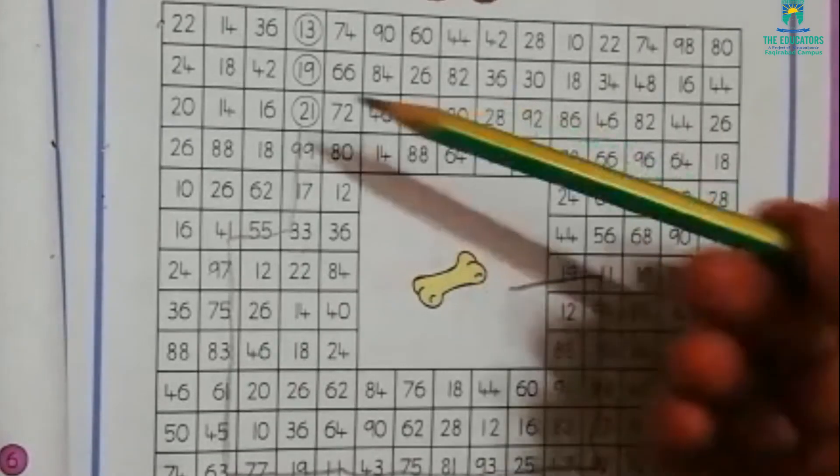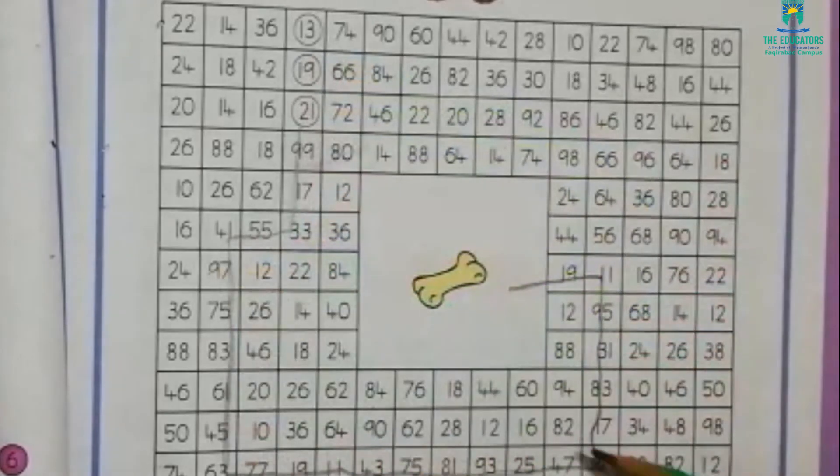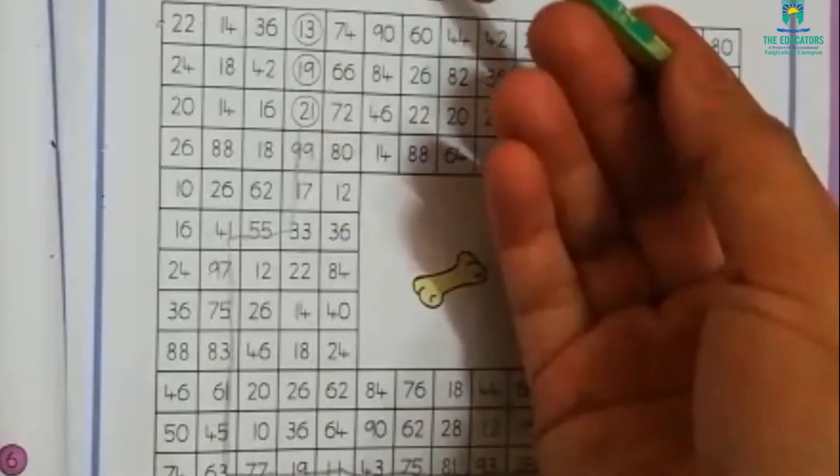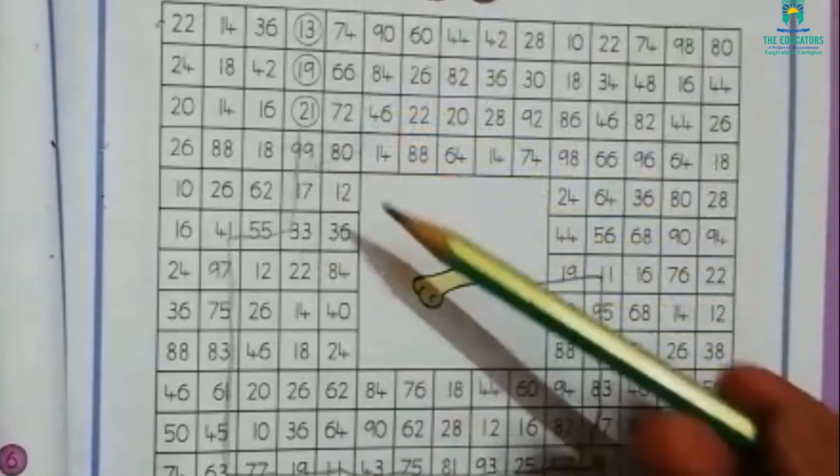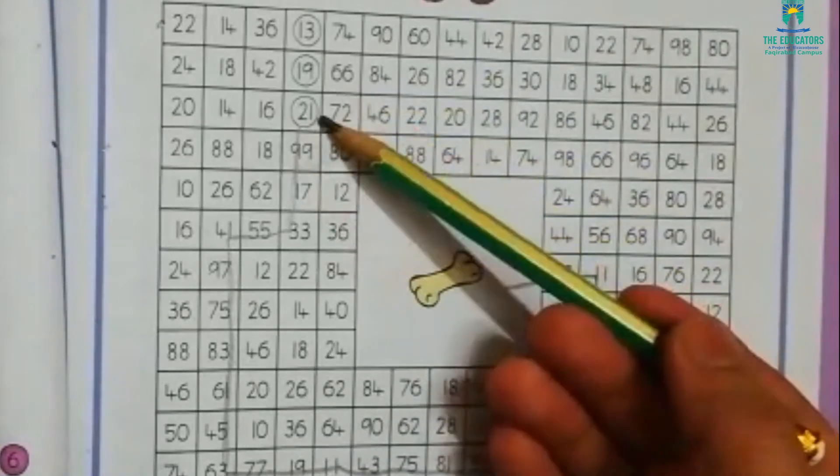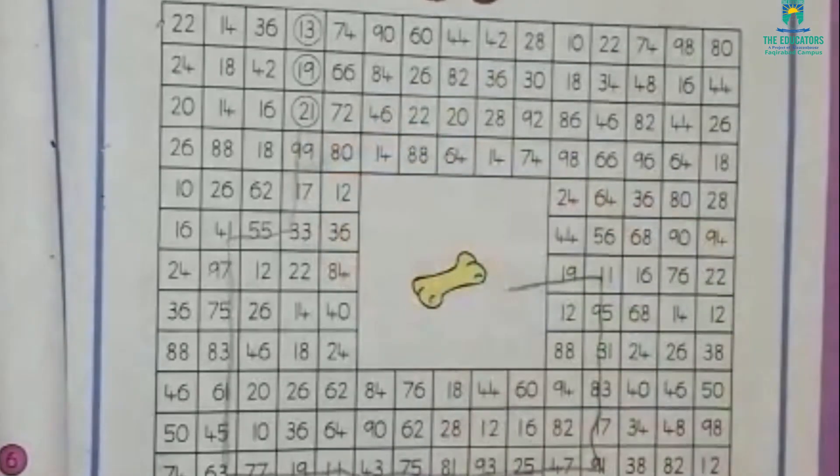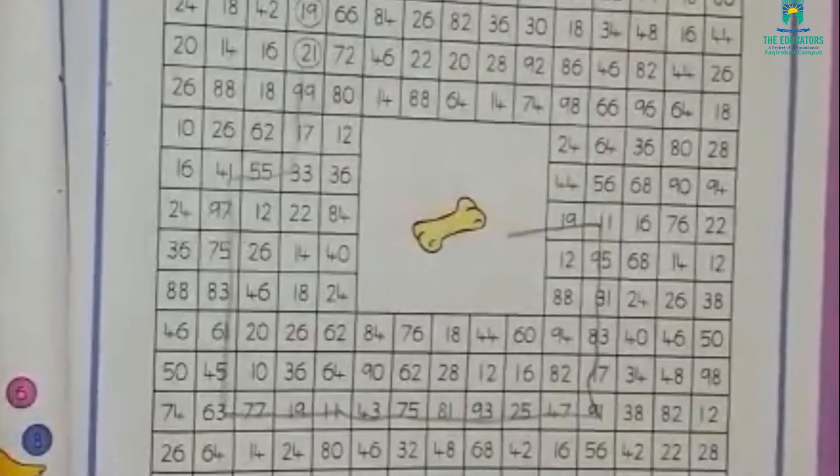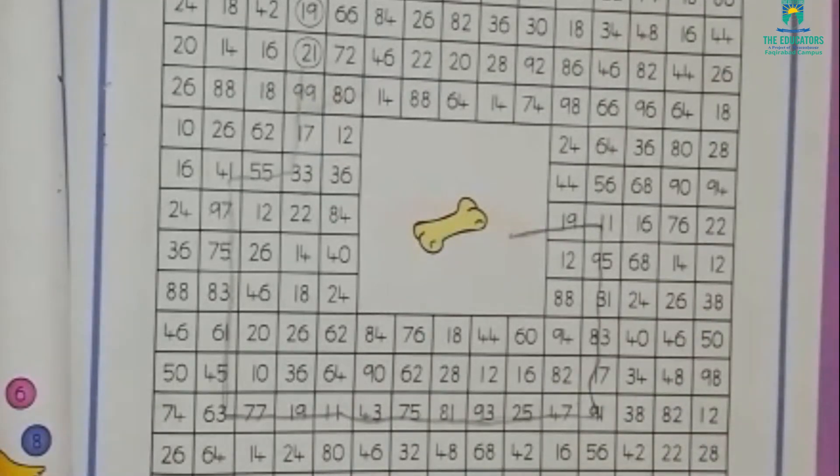Students, you can see that in all these odd numbers we have 1, 3, 5, 7, and 9 at the units place. Okay, I think it will be enough for you guys. Okay students, have a nice day. Allah hafiz.